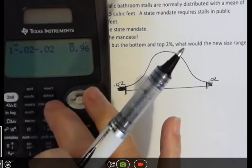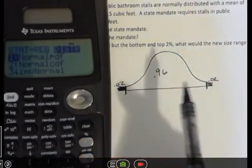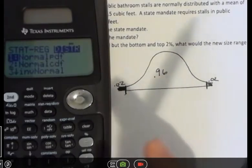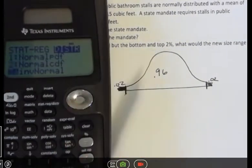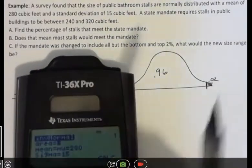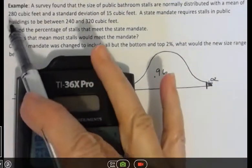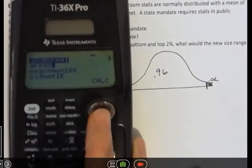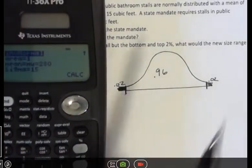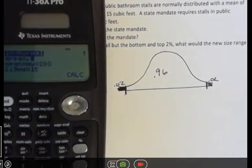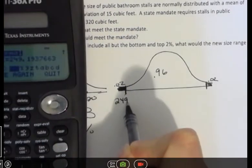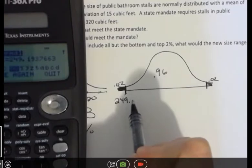We're going to do second function data. In this case, we know what the area is we're interested in, and we're looking for the z-score. So I'm going to go to inverse normal and hit enter. Now my data, I didn't clear it, so I still have the 280 as my mean and the 15 as my standard deviation. But the area that I'm interested in is 0.02. And that means that would take it from 249.19, let's say.